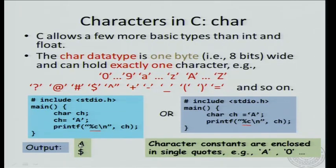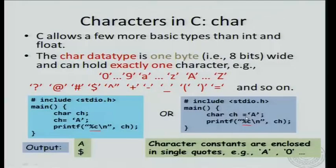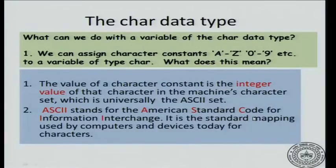There is also an abbreviated notation where you declare and initialize the variable at the same time: char ch = 'a'. This is similar to writing int i = 0 — the same concept. Now, what can we do with the character data type? For example, we can assign character constants to character variables.